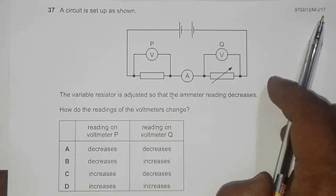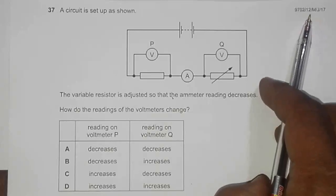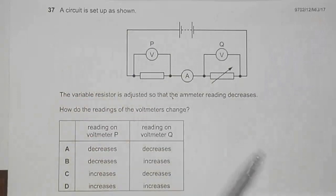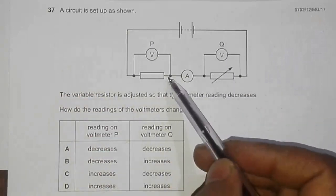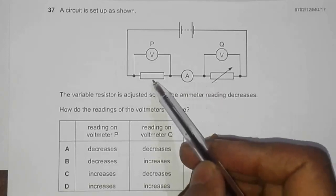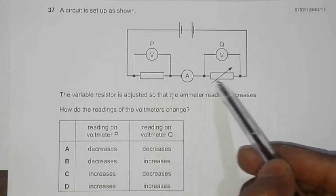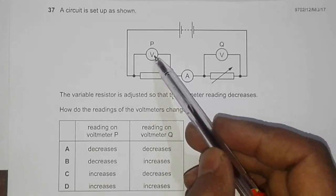Question 37 from 2017 May-June paper 1-2. Here we have a circuit with two resistors: one fixed resistor and one variable resistor. We have voltmeters P and Q both across these resistors.